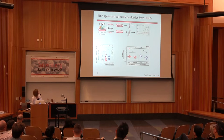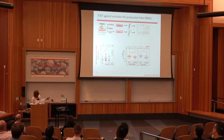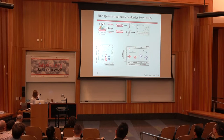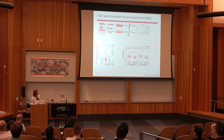In in vitro experiments, when we take PBMCs from ART-suppressed HIV-positive donors and treat them in culture with GS9620 and then look at supernatants to quantify viral production, we see modest but significant induction of viral RNA in the supernatant. Compared to a potent mitogen such as PMA and ionomycin it's not as robust, but nonetheless this is what we see.